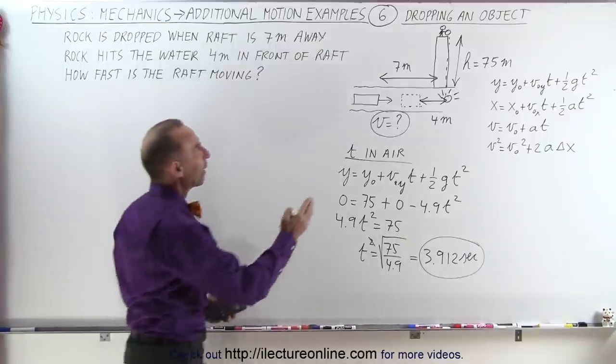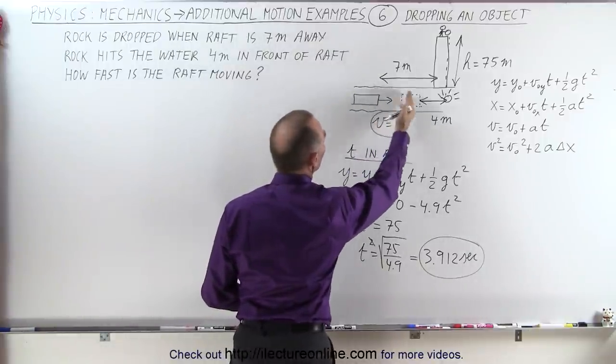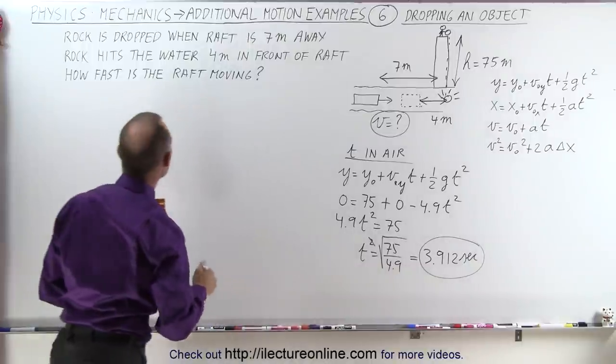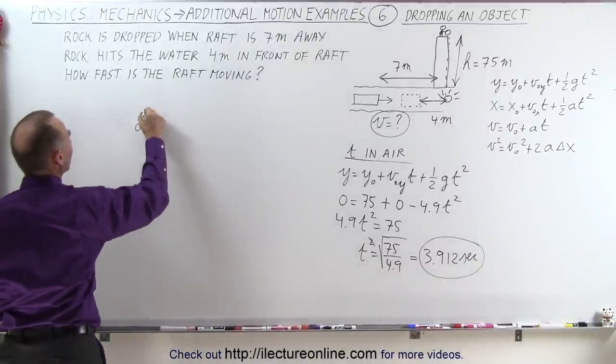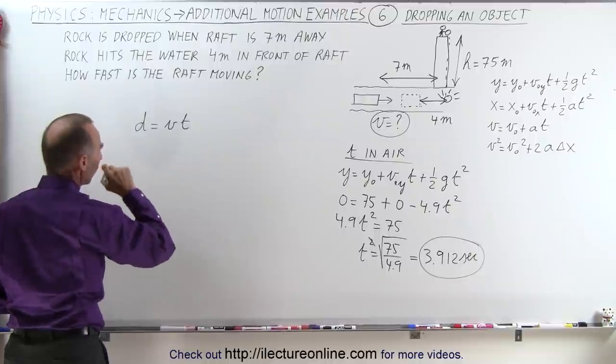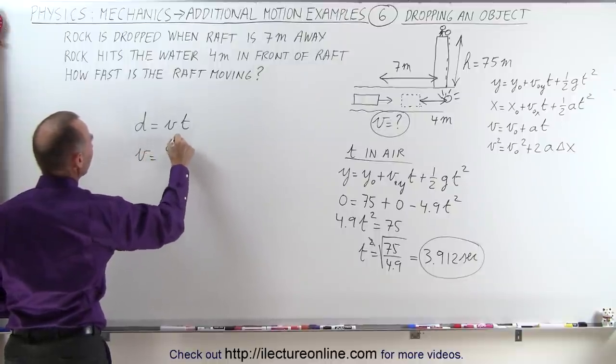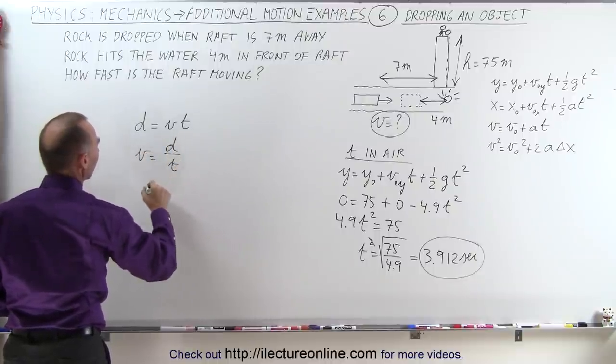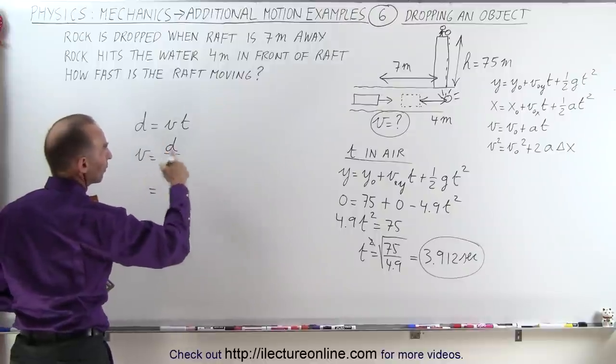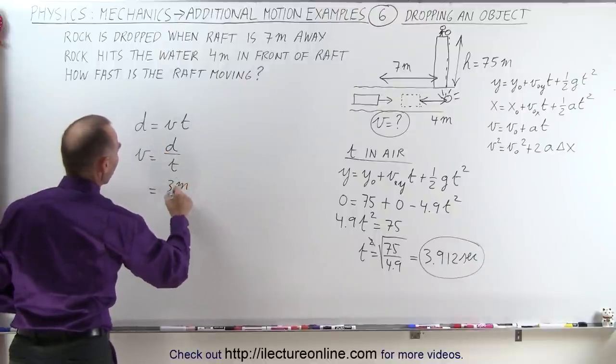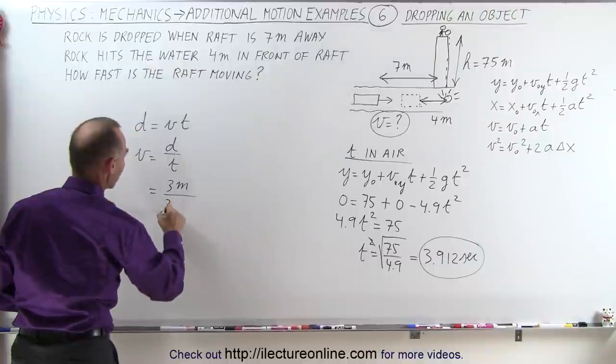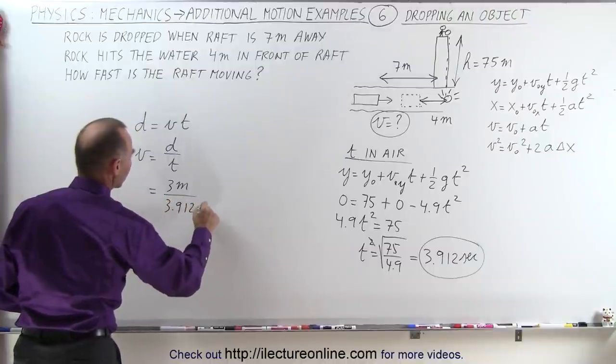During that time, the raft will have traveled a distance of 3 meters, which means that now we can say that distance equals velocity times time, or velocity equals distance divided by time. The distance traveled from 7 to 4 is 3 meters, and the time is 3.912 seconds.